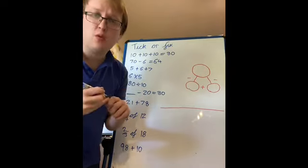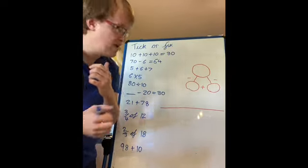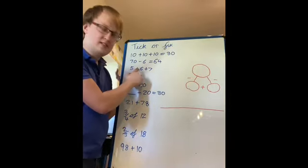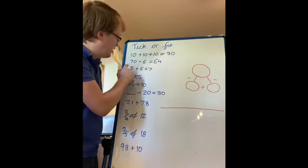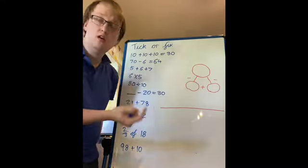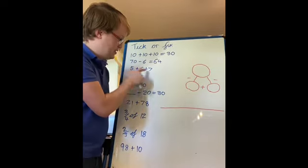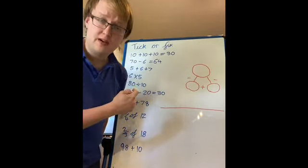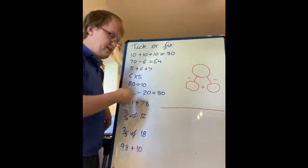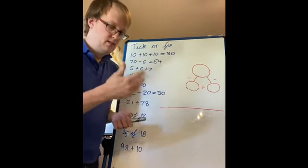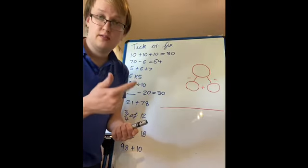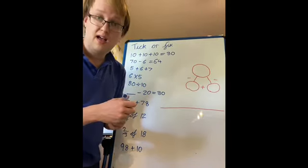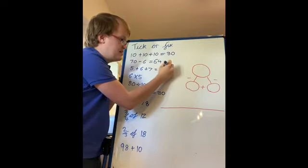We've got another question here where we're adding more than one number together: 5 plus 6 plus 7. You could do this however you want. You could go 5 add 6 and then add 7, or if you want to be like me, you could go backwards and start with your biggest number. So 7 add 6 is 13, add 5 is 18. So the answer was 18.